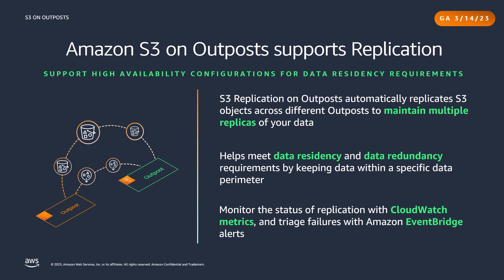S3 replication on Outpost also provides detailed metrics and notifications to monitor the status of your replication. You can monitor progress by tracking bytes pending, operations pending, and replication latency between your source and destination Outpost buckets using CloudWatch. You can also set up Amazon EventBridge rules to receive replication failures to quickly diagnose and correct configuration issues.